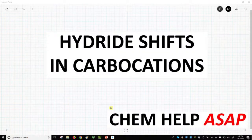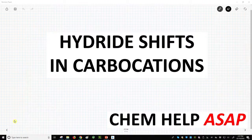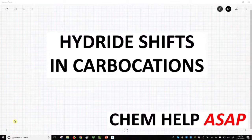Welcome to Chem Help ASAP. Let's talk about this interesting trait of carbocations - they can undergo something called a hydride shift.